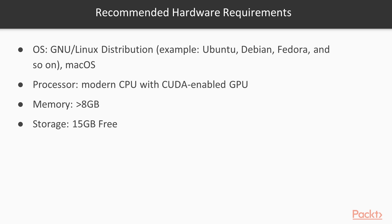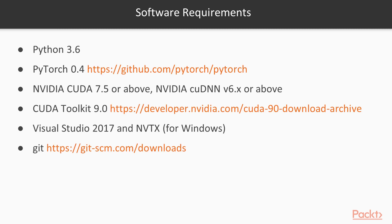Comparing with the previous slide, more random access memory and storage is required. As far as software is concerned, you will definitely need to install Python, PyTorch, and CUDA Toolkit. If you don't have all the stuff already installed, don't worry — we will cover all the installation issues in the next video. So, let's get started!